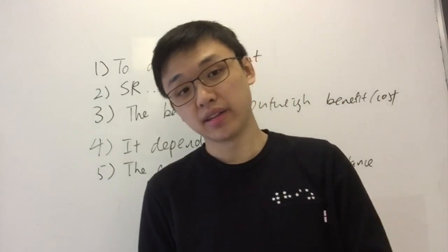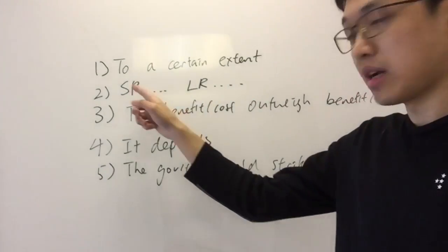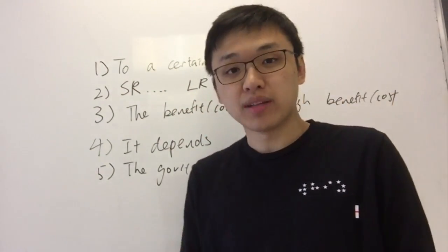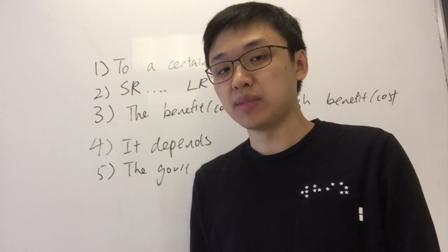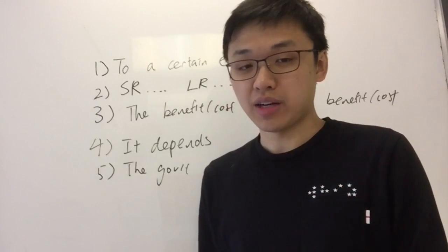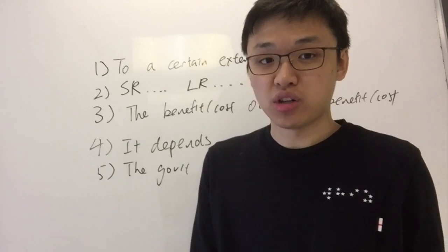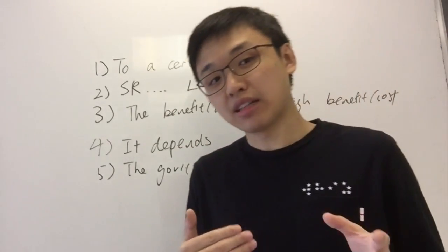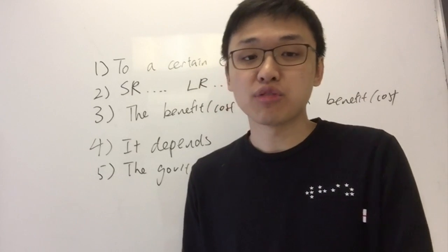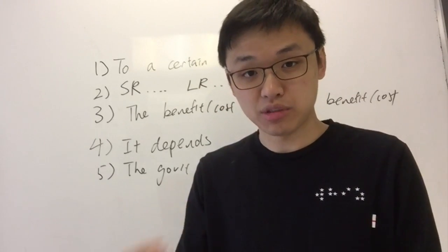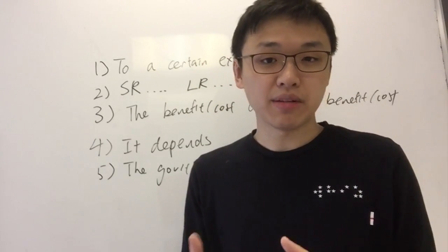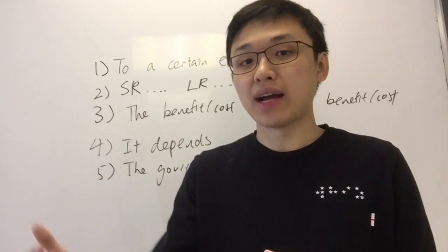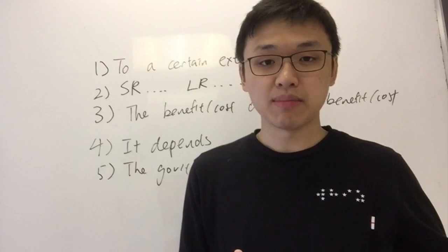The second way you can conclude is by talking about the short run and long run. For example, you can say: 'In the short run, indirect tax for cigarettes tends to be less effective because the PED is lower in the short run. But in the long run, indirect tax is likely to be more effective because over time consumers can find substitutes, the PED will rise, and there will be a larger fall in quantity demanded in the long run.'